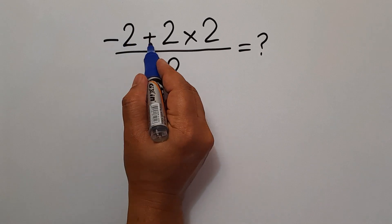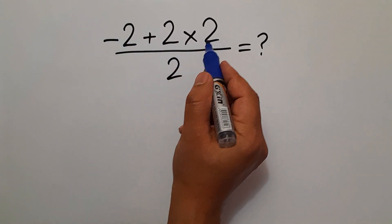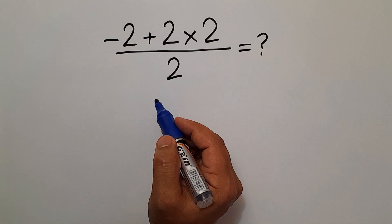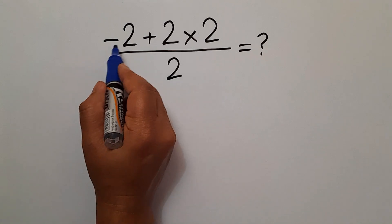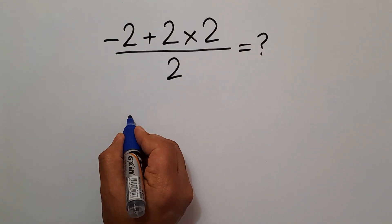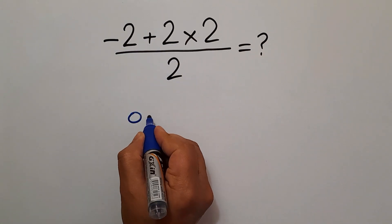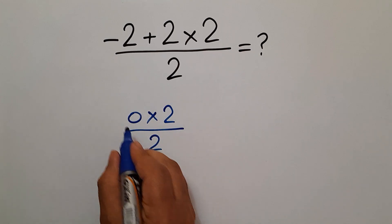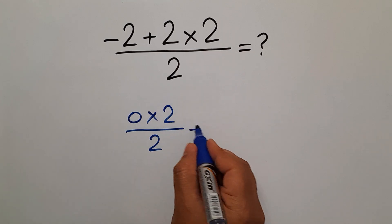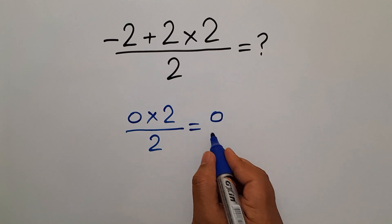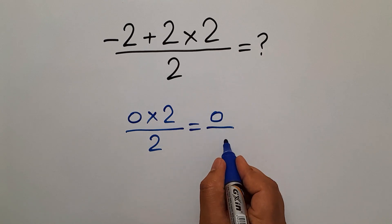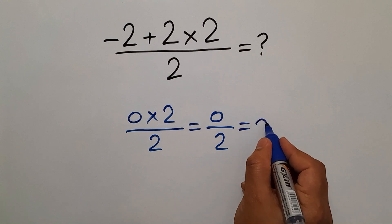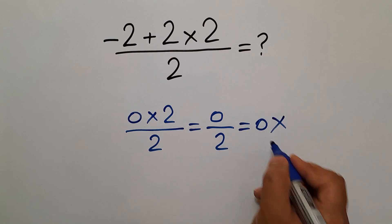Negative 2 plus 2 times 2 times 2 over 2. Are you ready to solve? Let's go ahead and get started. Negative 2 plus 2 gives us 0. And 0 times 2 divided by 2 — 0 times any number gives us just 0. And 0 over 2 gives us 0. But this answer is not correct.